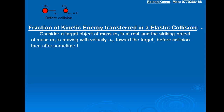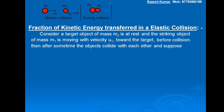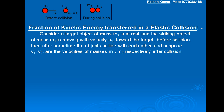Then after some time, the objects collide with each other — that is, the object of mass M1 collides with the object of mass M2. Suppose V1 and V2 are the velocities of masses M1 and M2 respectively after collision.